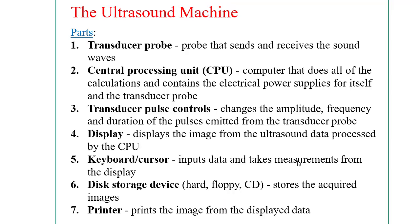The basic parts of an ultrasonography machine are: the transducer probe, which sends and receives sound waves; the central processing unit (CPU), which performs all calculations and contains the electrical power supply for itself and the transducer probe; and the transducer pulse control, which changes the amplitude, frequency, and duration of pulses emitted from the transducer probe.